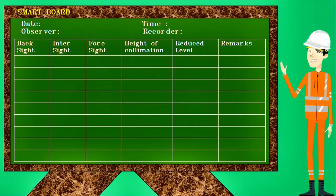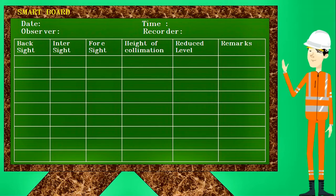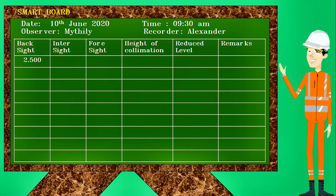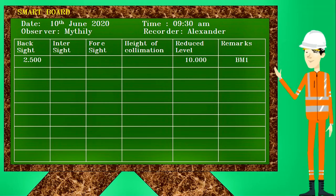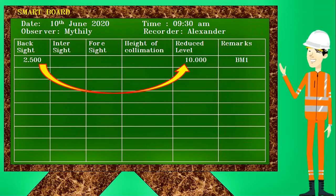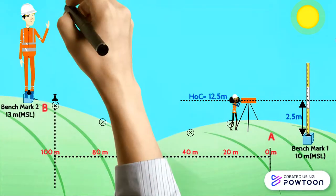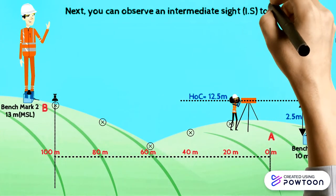Now we'll see how the recording of this reading is done in the field notebook. First, fill in details such as date, time, observer, and recorder. Record the backsight reading in the backsight column, then write the reduced level of benchmark 1 in the reduced level column and the details in the remarks column. To calculate the height of collimation, add the backsight reading to the reduced level of the benchmark, and write the value in the height of collimation column. Next, observe an intermediate sight to point A.